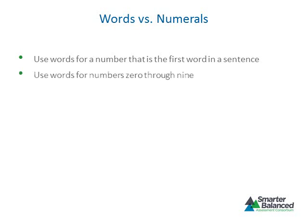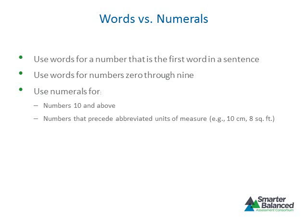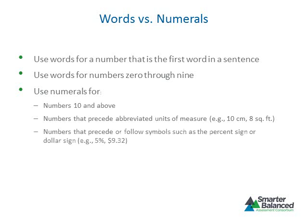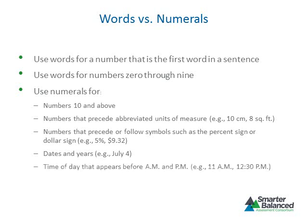Words should also be used for the numbers 0 through 9, with the following exceptions: use numerals for numbers 10 and above, numbers that precede units of measure, numbers that precede or follow symbols such as the percent sign or dollar sign, dates and years, time of day that appear before a.m. and p.m., and ordered pairs and coordinates.